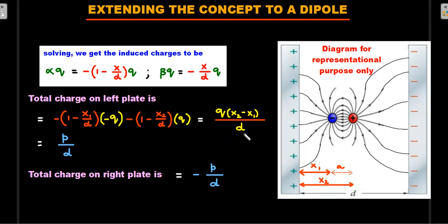Since x2 minus x1 is a, and q into a is the value of the dipole moment, you end up getting p by d as the induced charge on the left plate, which is independent of the position of the dipole. That distance of the midpoint of the dipole to the plate didn't matter in the value of the charge induced.